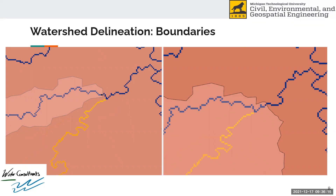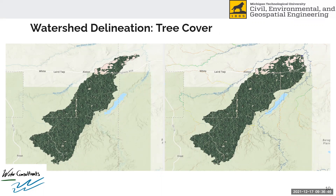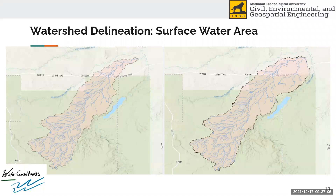The blue and yellow lines are flow accumulation lines in ArcGIS — the blue one is the Silver River and the yellow one is Pine Creek. This next image shows the impervious surfaces within those two watersheds. The white dots are what we would consider impervious surfaces — so roads and structures mostly. The watershed that includes Pine Creek has a little bit more impervious surface density in that region. Here is the tree cover in the two watersheds — since the Pine Creek region is a little more developed, there's less density of tree cover there. There is also a lower density of surface water coverage in the area of Pine Creek.